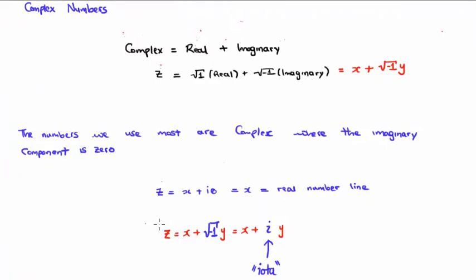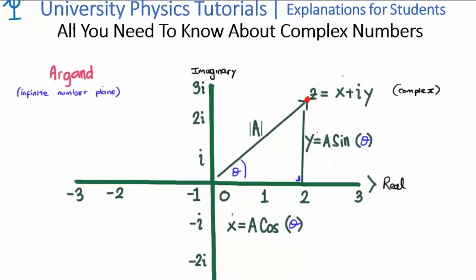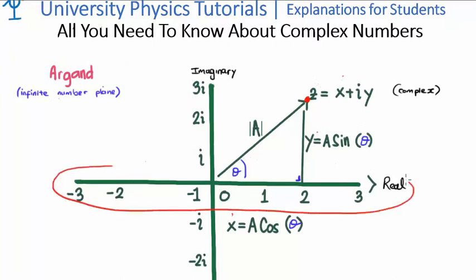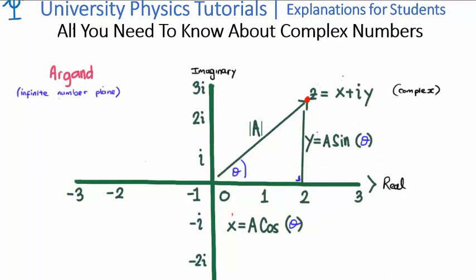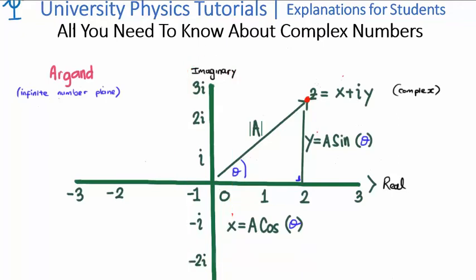Our arbitrary complex number z is given as x plus the square root of negative 1 times y. The square root of negative 1 is so important we give it its own placeholder — the Greek letter iota — so z is x plus iota times y, or x plus i times y. The 2D plane used to represent complex numbers is known as an Argand diagram. The imaginary number line is perpendicular to the real number line, and its building block is the square root of negative 1, or iota.